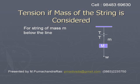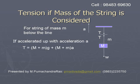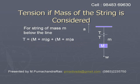If we consider the mass of the string, and suppose that the mass of the string from the block up to the line is small m, then the tension at that line will be equal to (M plus m) times g plus (M plus m) times A, when the system is moving up with an acceleration A.